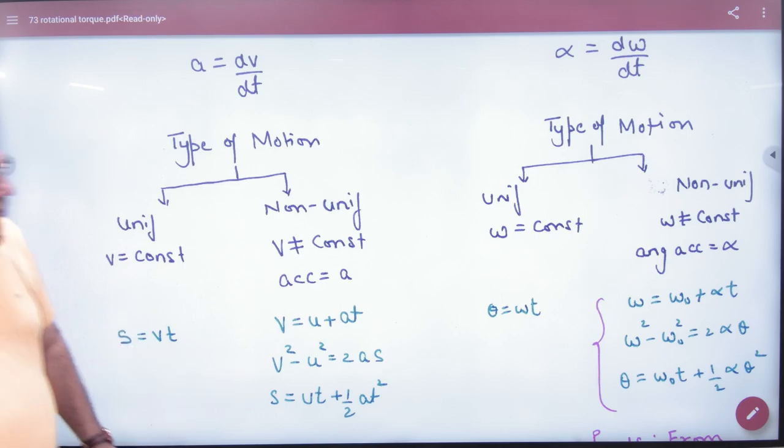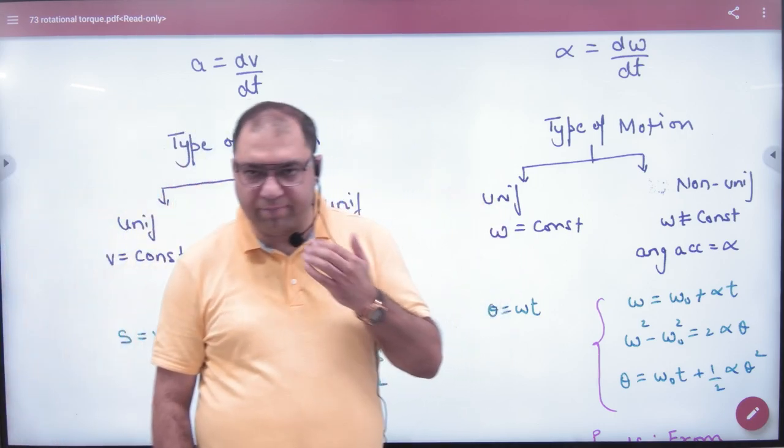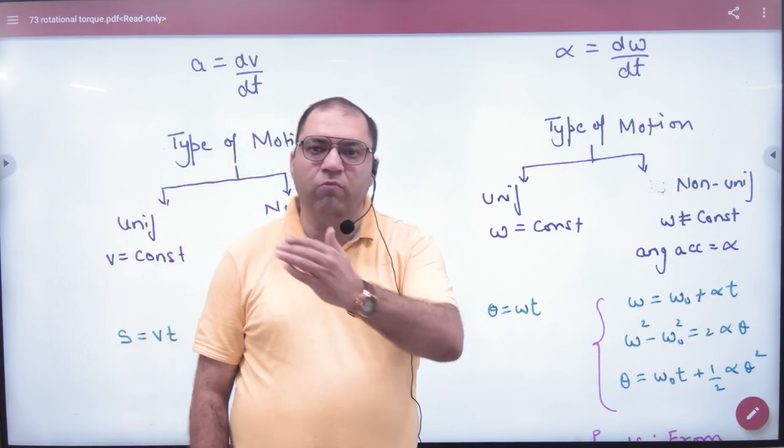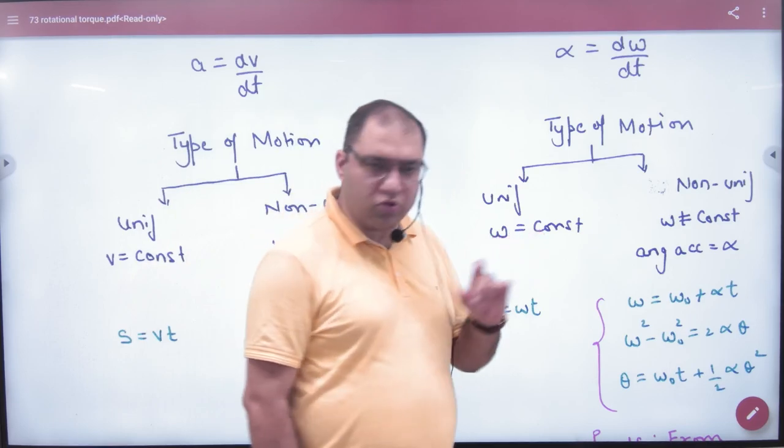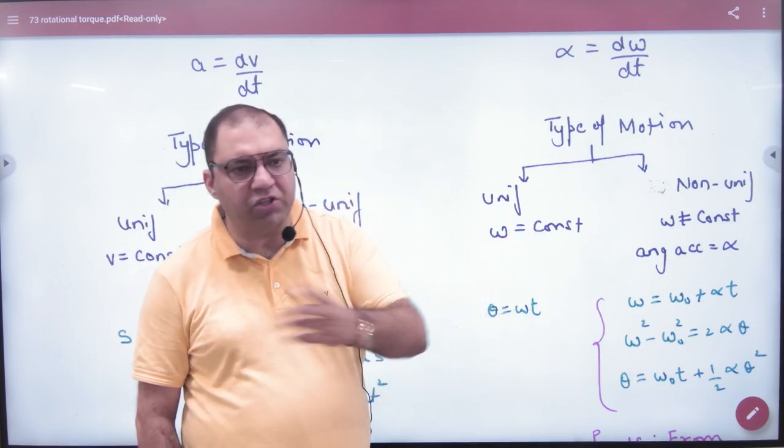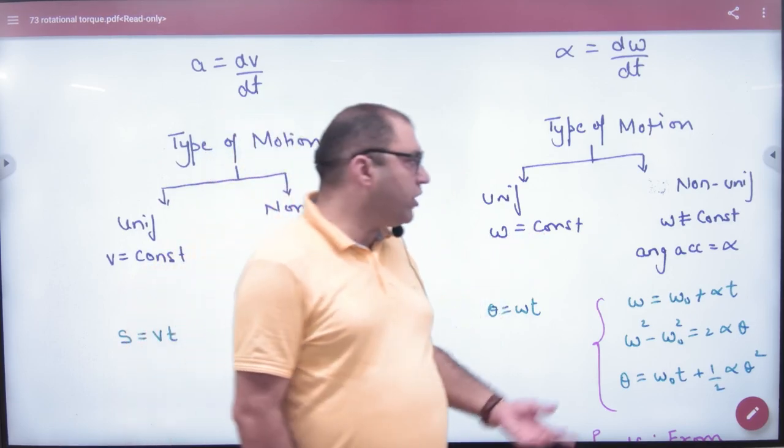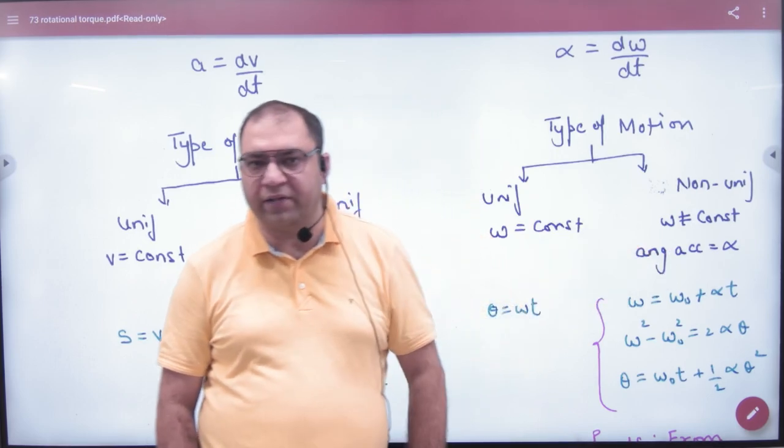In the same way, type of motion: if we talk about two types of motion, either the body has constant omega, called uniform motion, or omega is changing. When omega changes, then alpha is generated. Alpha means angular acceleration.